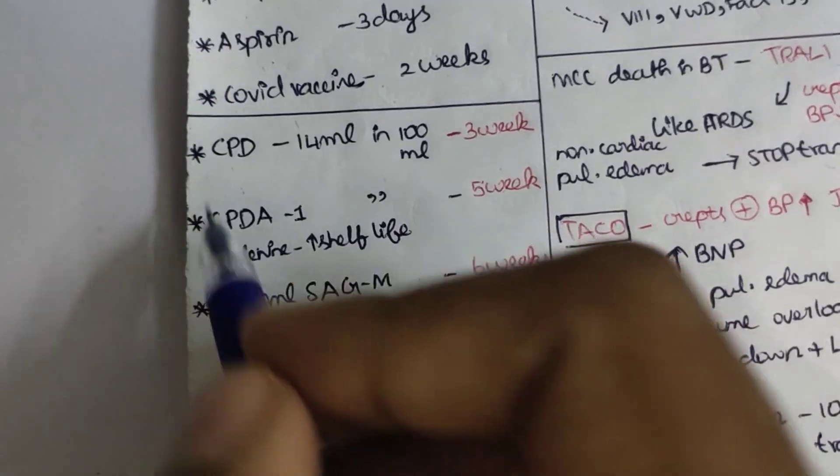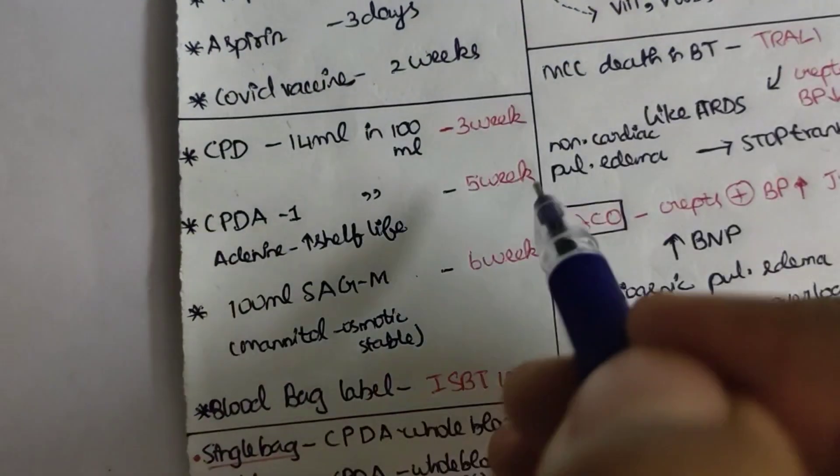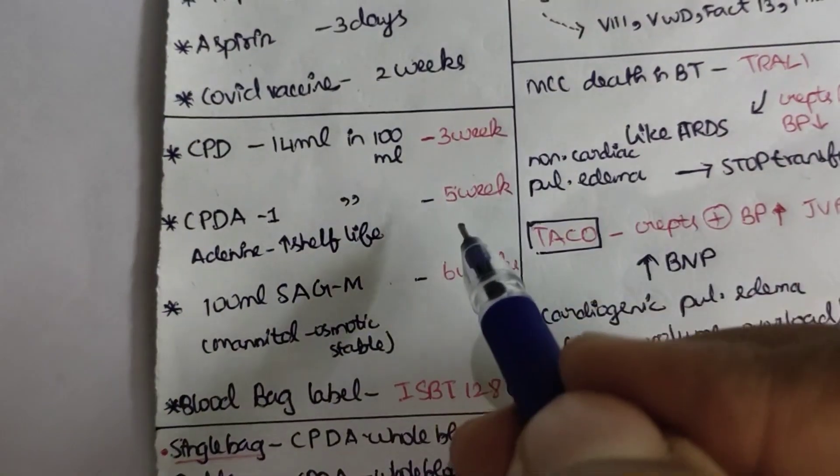With this, if we add adenine, it increases the shelf-life by two weeks, making it five weeks.